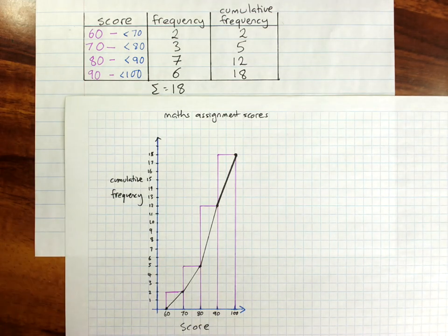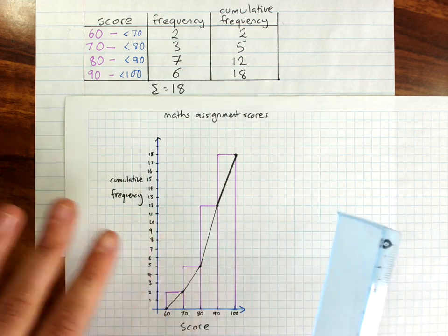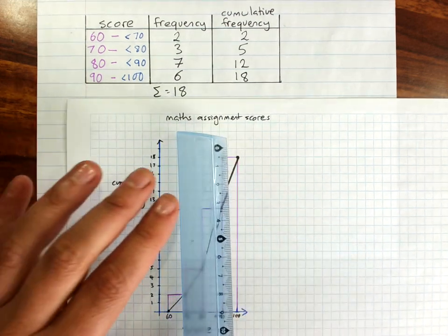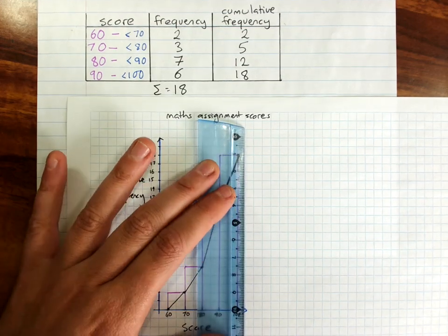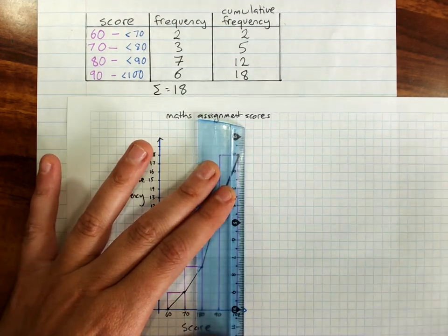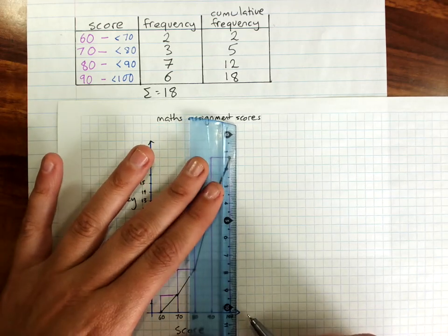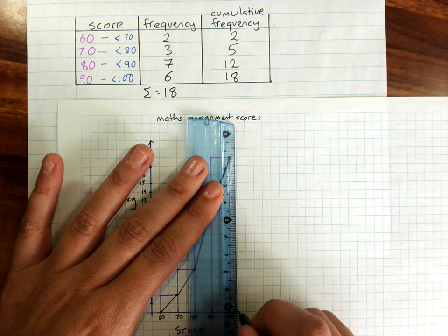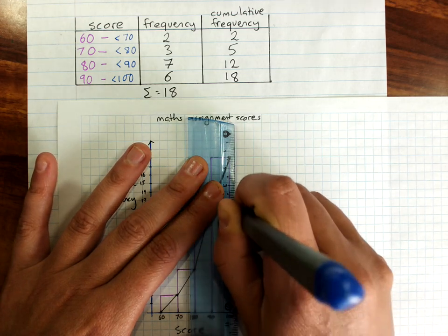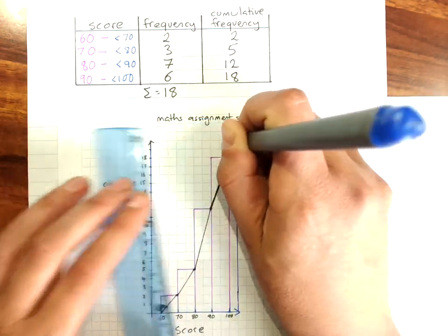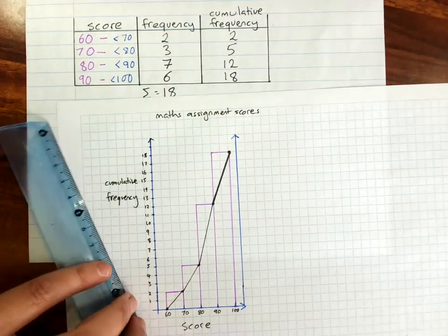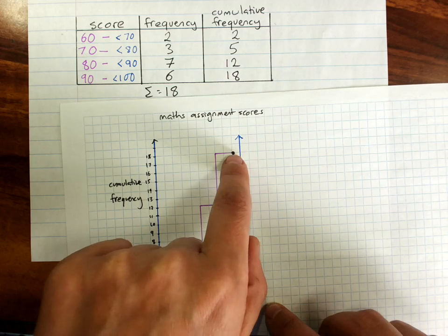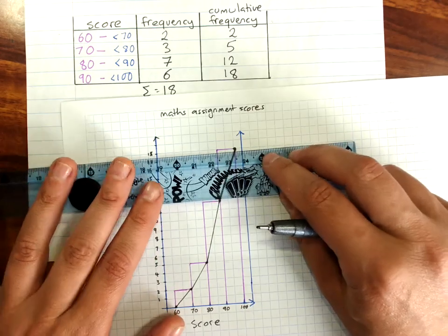Now we also have to include percentiles. You'll remember last time when we did the frequency histograms, we often put percentages up the side. It's really easy on this one. Again, leave your half column width after the last column. Do another y-axis. And where your end point was is 100% of your data.